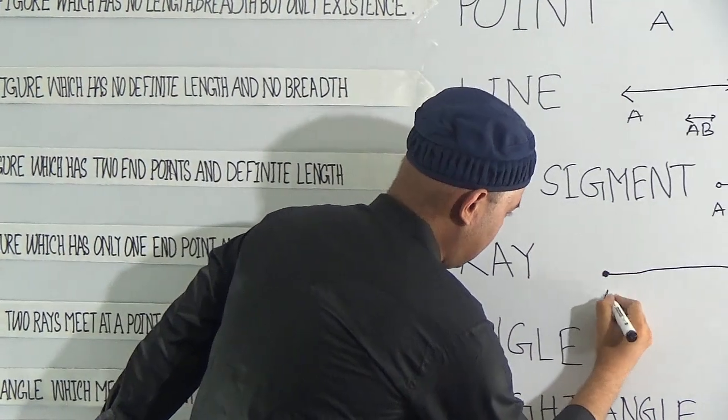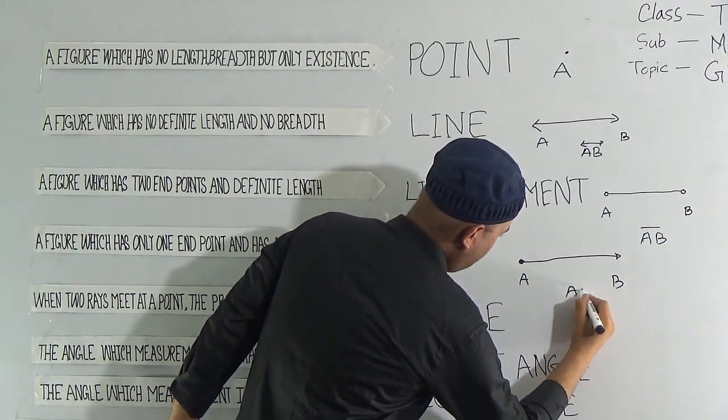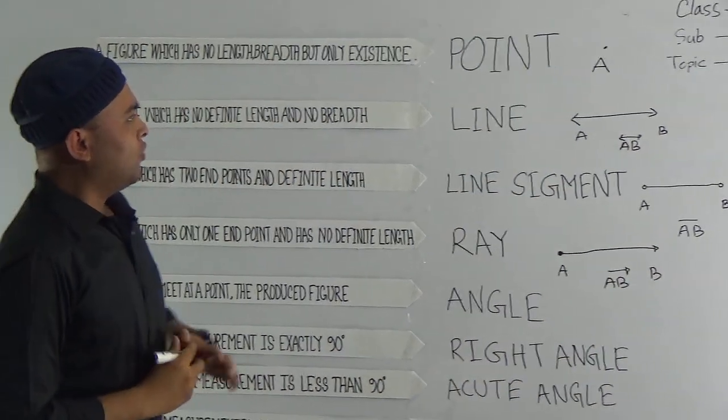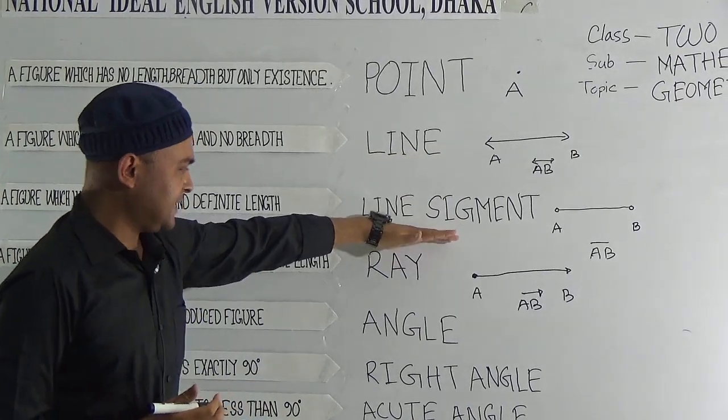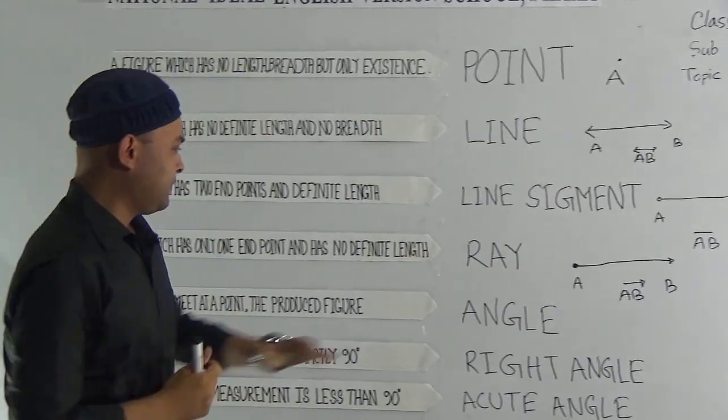If we say the point is A and here is B, then AB is the ray. We have already learned point, line, line segment, and ray. Now we will learn the angle.